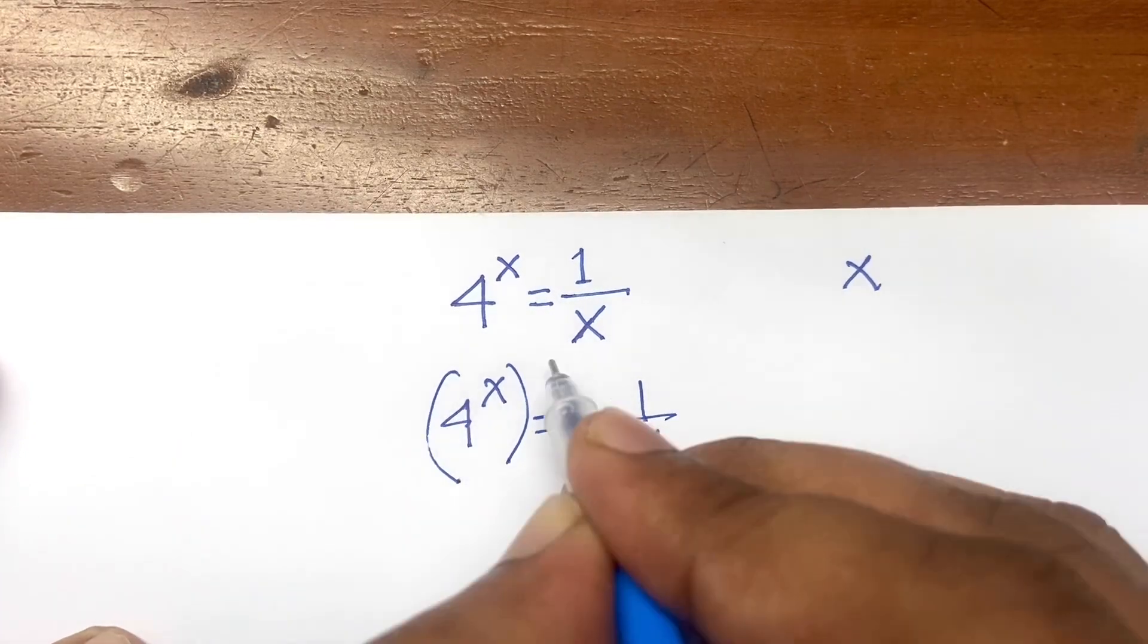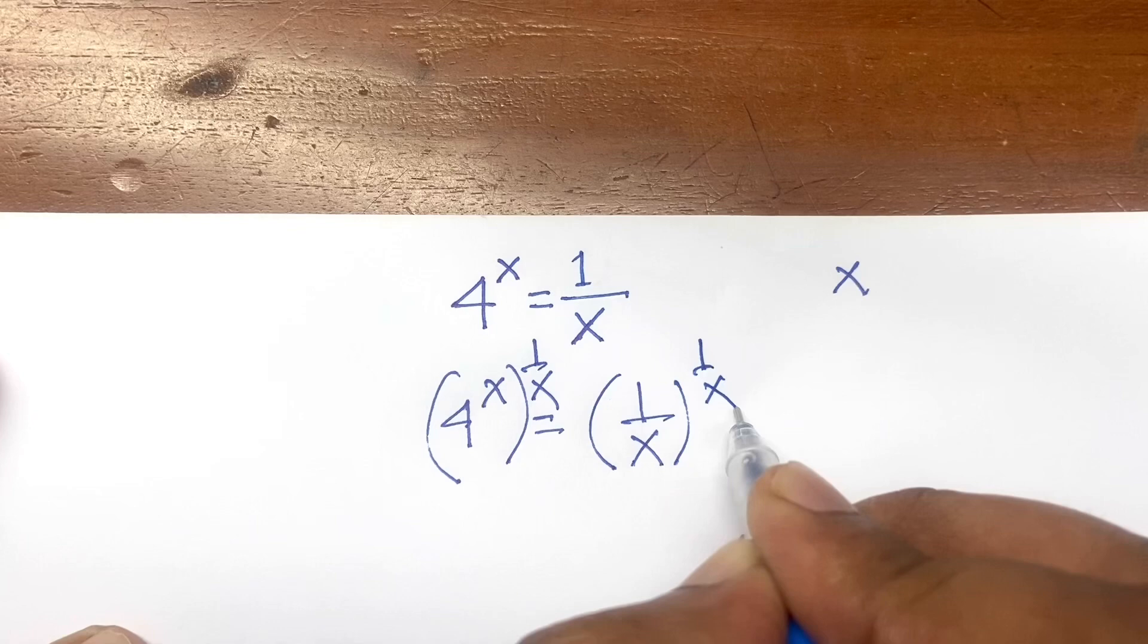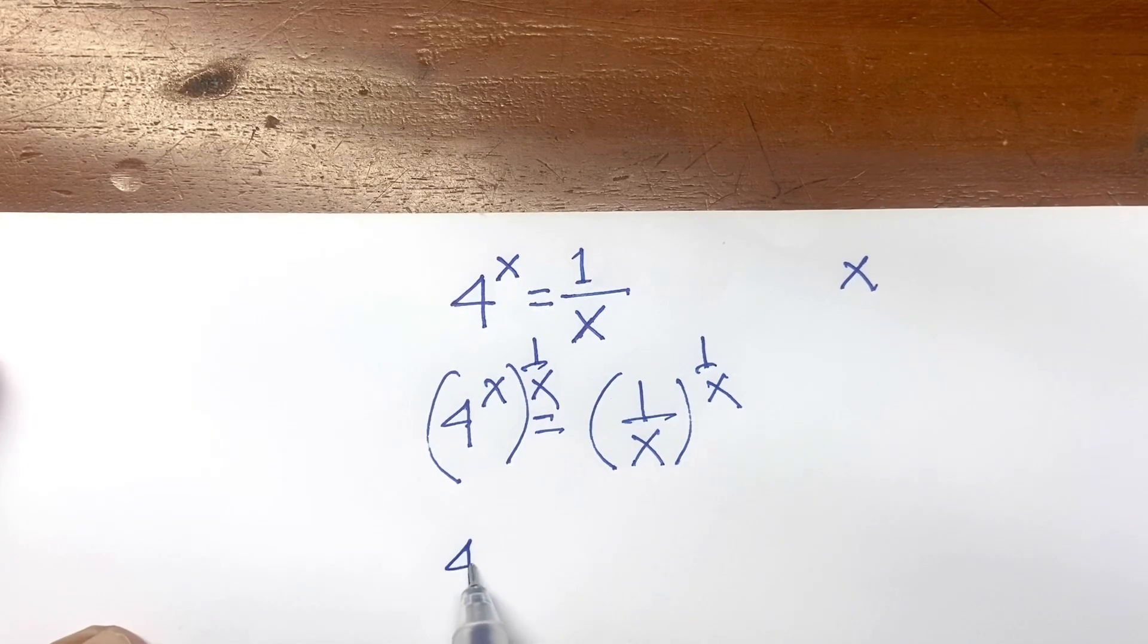Now, I use power both sides 1 over x. Now, here is 4 to the power x times 1 over x.